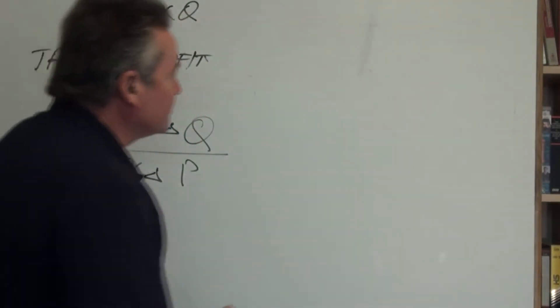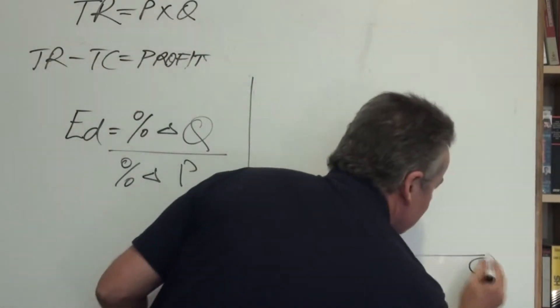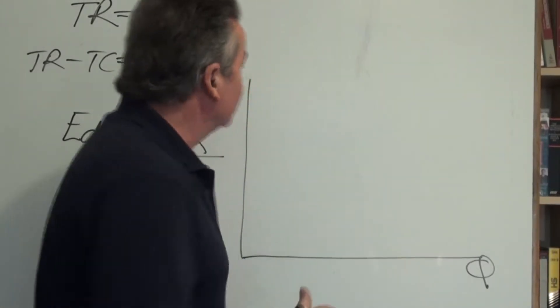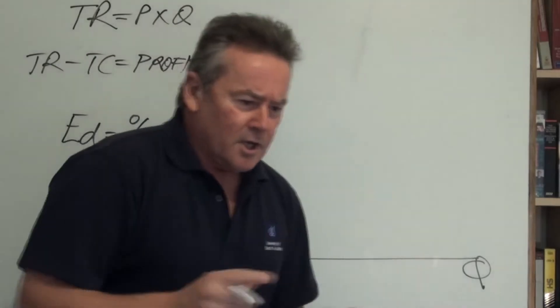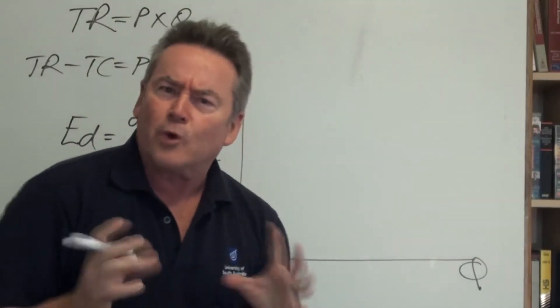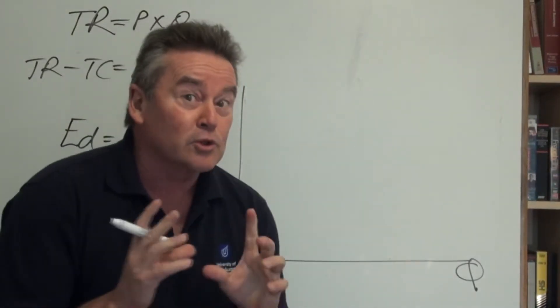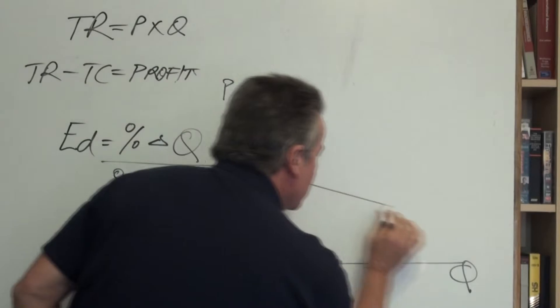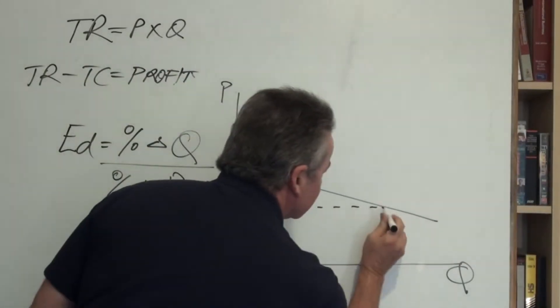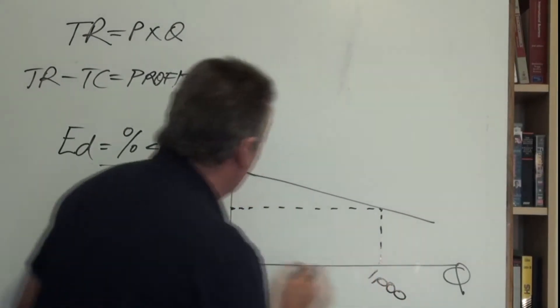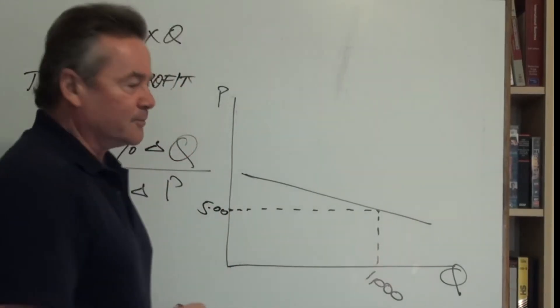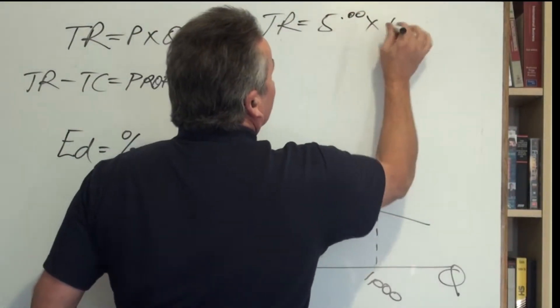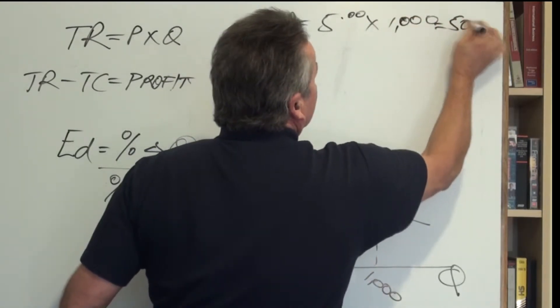Let me give you a little example. I want you to imagine you've graduated, got a job, and you're a junior exec, and you've been invited to a management meeting. You're sitting there, and somebody in the board meeting says we've got to put our prices up, we're not making enough money. Alarm bells should go off at this point. What if you knew that you were selling 1,000 units a week at $5 each? Well, we know that TR is 5 times 1,000, which is clearly $5,000.